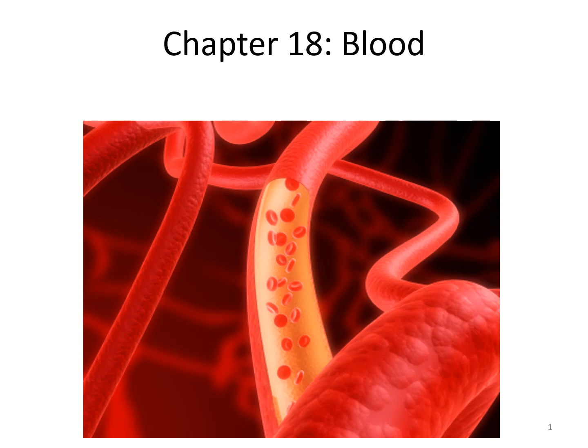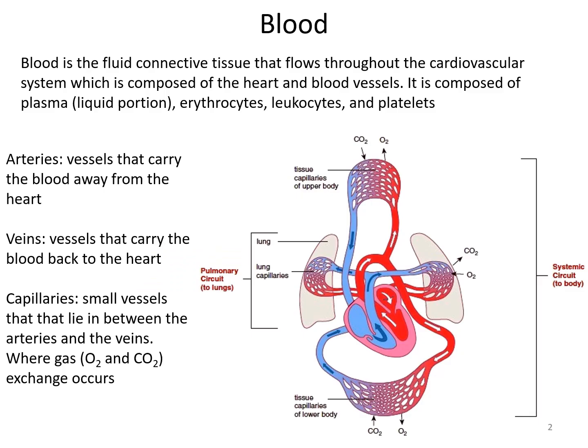Chapter 18 looks at the blood. Blood is the fluid connective tissue that flows throughout the cardiovascular system, which is composed of the heart and the blood vessels. Blood is made up of the liquid portion — plasma — and the cellular portion: erythrocytes (red blood cells), leukocytes (white blood cells), and platelets, which are cellular fragments important for blood clotting.